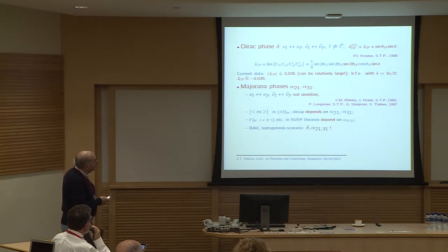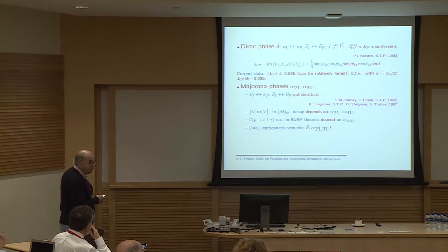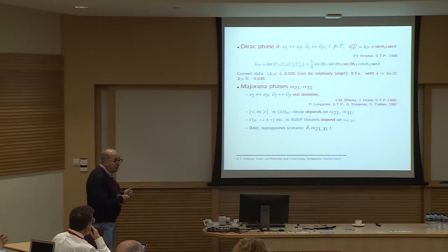In the standard parametrization, the J_CP factor has a specific form and the only unknown quantity is sin δ. We have hints that δ equals 3π/2, and if confirmed, the J_CP factor in the lepton sector will be of the order of −0.035, which is three orders of magnitude bigger than the J_CP factor in the quark sector.